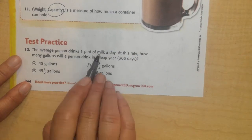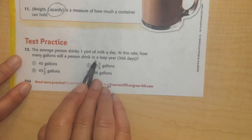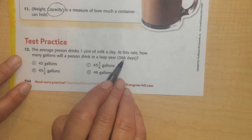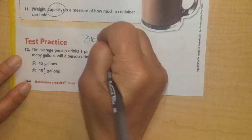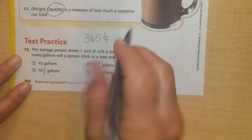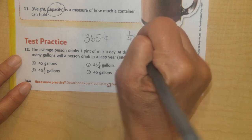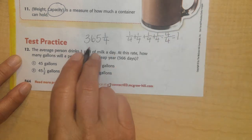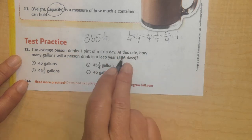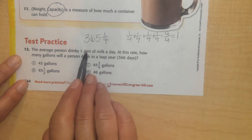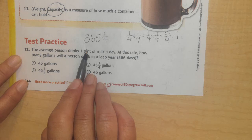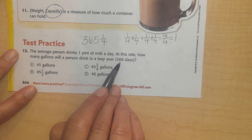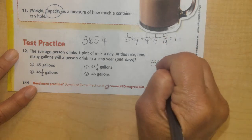All right. And last but not least, the average person drinks one pint of milk a day. At this rate, how many gallons will a person drink in a leap year? The normal year is 365 days. But a leap year has one extra day. Every year, our calendar is 365 and one-fourth of a day. So after four years, I would have one-fourth plus one-fourth plus one-fourth plus one-fourth, which is equal to four-fourths, which is equal to one, which gives me one whole extra day. So 365 plus one would be 366 days. So if you drink one pint of milk a day, in 366 days, I drink 366 pints.